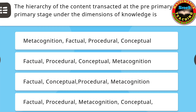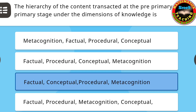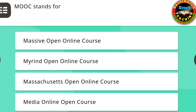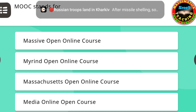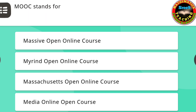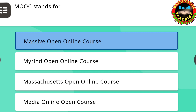The next question: The hierarchy of the content transacted at the pre-primary or primary stage under the dimensions of knowledge is — the correct answer is: factual, conceptual, procedural, and metacognition. The next question: MOOC stands for — the correct answer is: Massive Open Online Course.